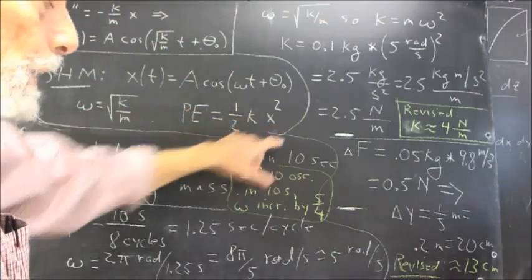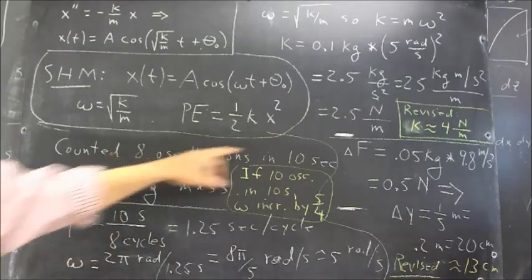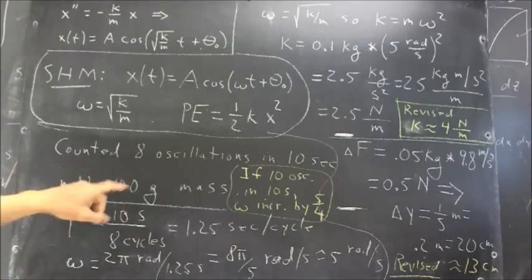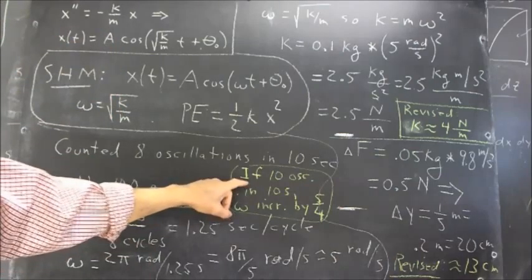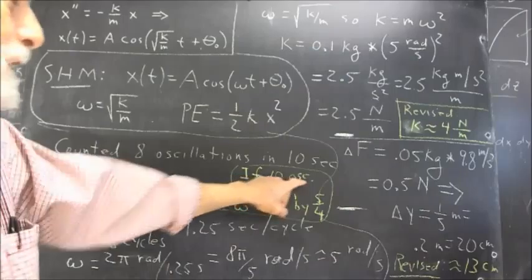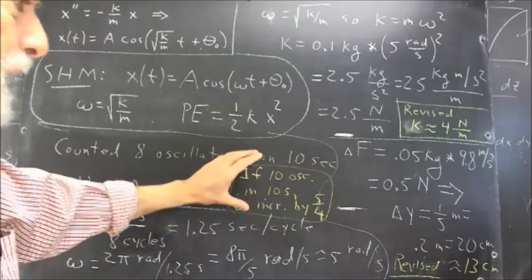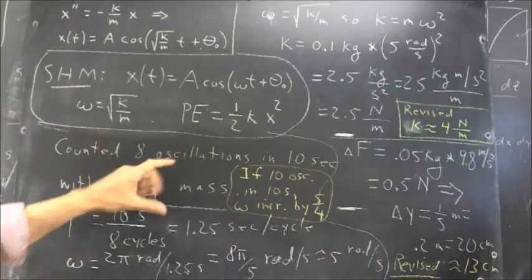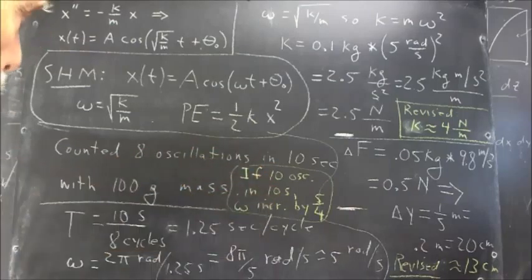And omega is here taking the value of the square root of K over M, and potential energy one-half K X squared. Again, we've established all that at some length. Now the first time I did this, I wasn't in a very good position. I counted eight oscillations in ten seconds with a hundred-gram mass suspended from the rubber band chain. And later I got ten oscillations in ten seconds.